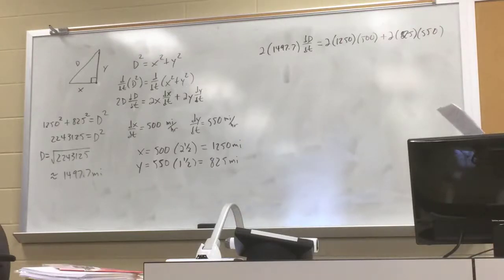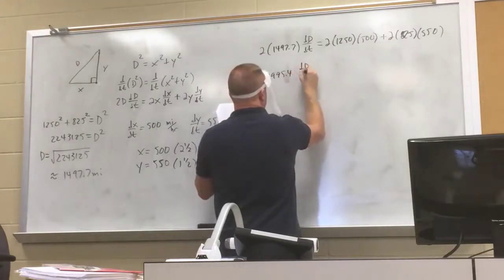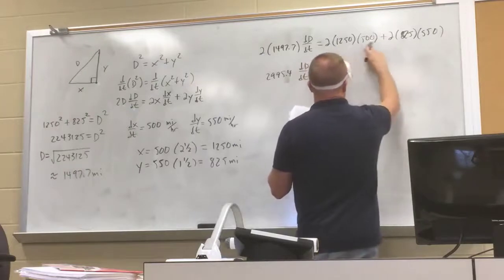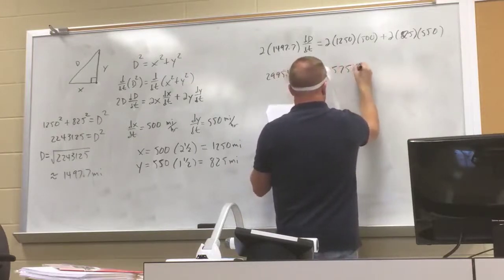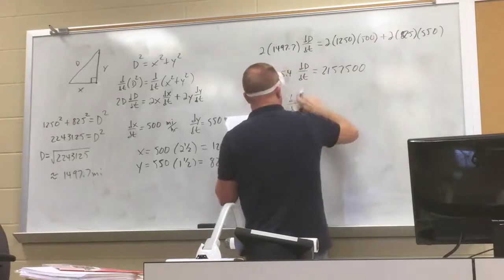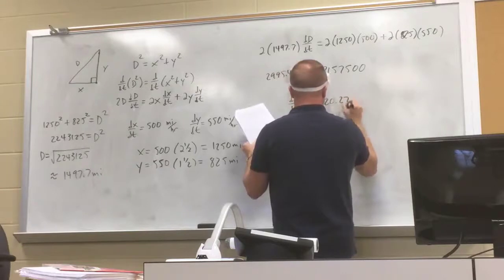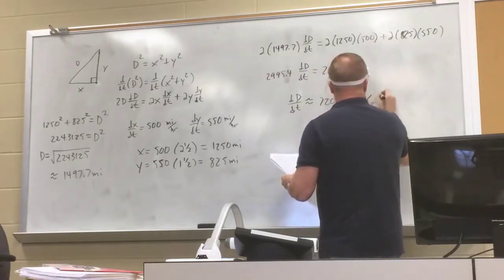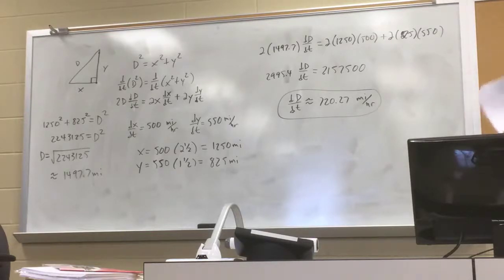Dividing: dd/dt ≈ 720.27 miles per hour. So at 2:30 p.m., the distance between the two planes is increasing at a rate of approximately 720.27 miles per hour.